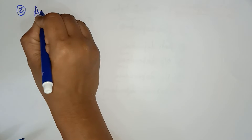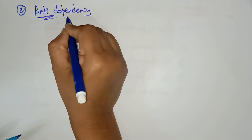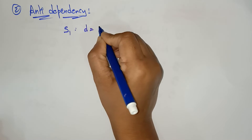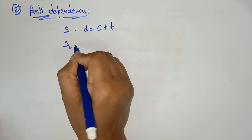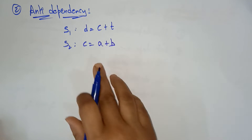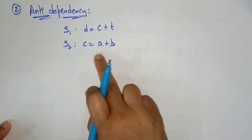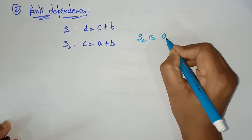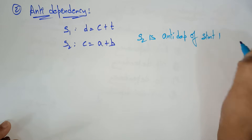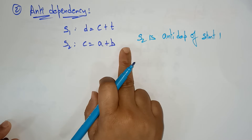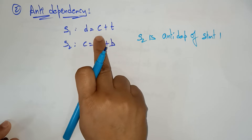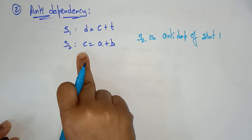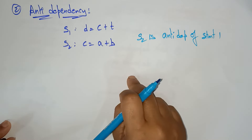The second type is anti-dependency, which is the reverse of flow dependency. Let me take two statements: S1 is D = C + T, and S2 is C = A + B. Here, S2 is anti-dependent on S1. S2 follows S1, and the result stored is overwriting the C value.